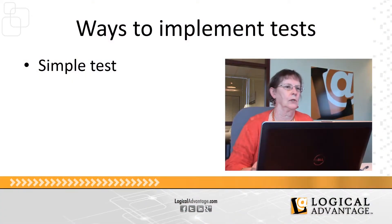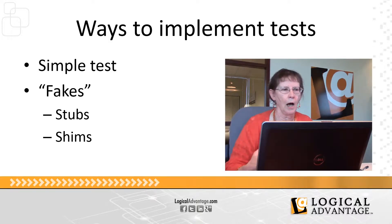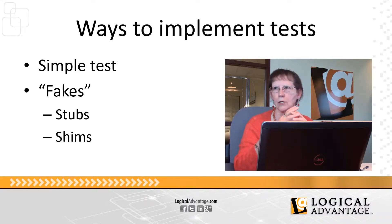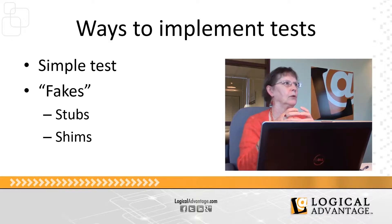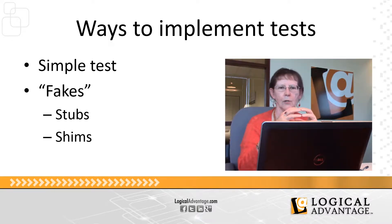As far as the way you can implement tests, there are several different techniques or patterns. One we're going to look at is just a simple test — set a property, did it set to what I thought? There are also things called fakes, which are related to mocking. Anytime you're writing a test, you want to isolate that test as much as possible because you don't want to test the whole application — you're trying to test one piece of code. By using fakes and stubbing out accesses to other pieces, you isolate that code.